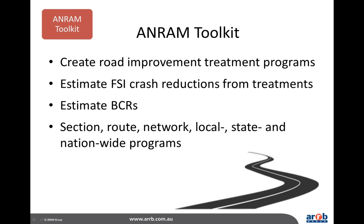Another feature of the toolkit is road improvement program development. Having analysed the road network using section analysis, users can create a hypothetical works program improving the most risk-critical road features. This part of the toolkit allows logically structured input of treatments such as provision of sealed shoulders, safety barriers, and intersection improvements. Users are prompted for cost estimates for each treatment, and the toolkit processes these inputs to produce expected crash modification factors, ANRAM FSI crash savings, and program-level benefit-cost ratios. The toolkit can be used to treat a road section, a whole route, or a whole road network, and can drive local, state, or nationwide road safety improvement programs.